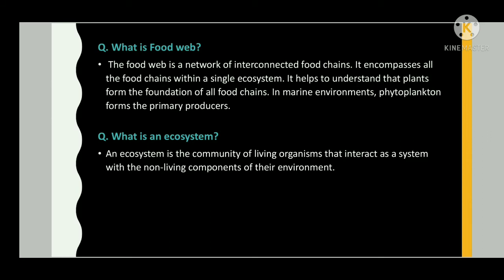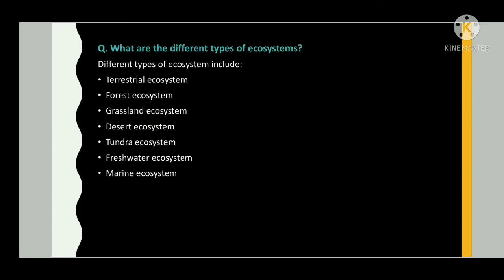What is a food web? The food web is a network of interconnected food chains. It encompasses all the food chains within a single ecosystem and helps to understand that plants form the foundation of all food chains. In marine environments, phytoplankton forms the primary producers. What is an ecosystem? An ecosystem is a community of living organisms that interact as a system with the non-living components of their environment.